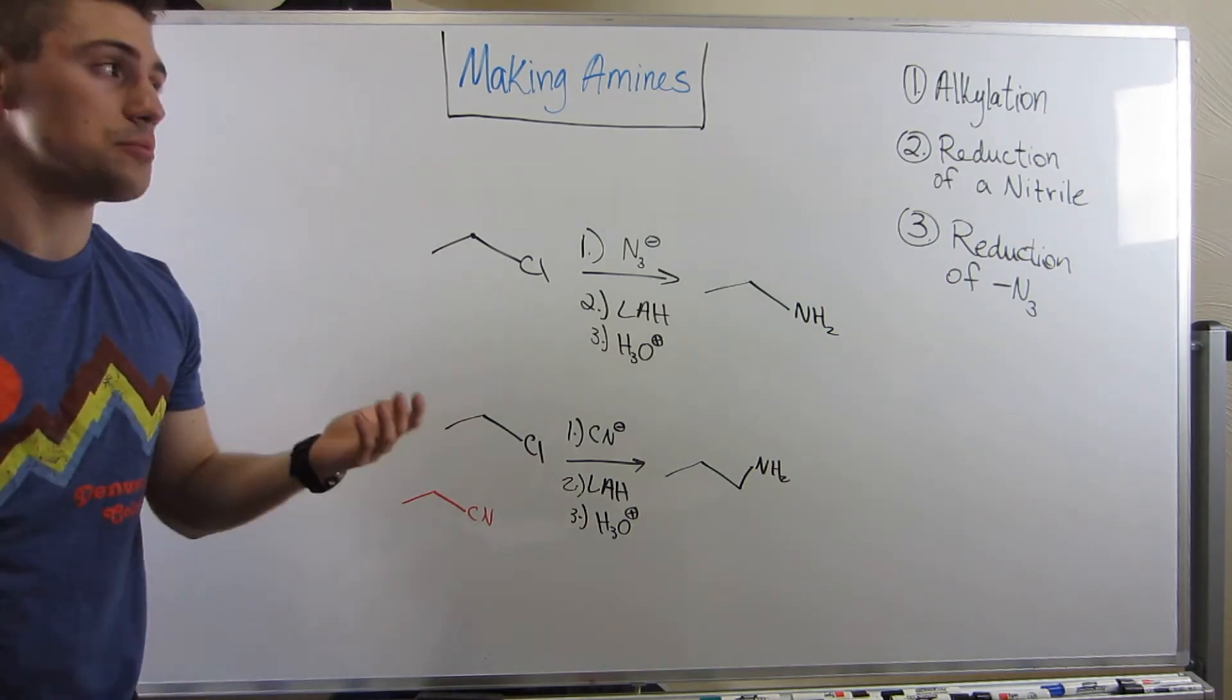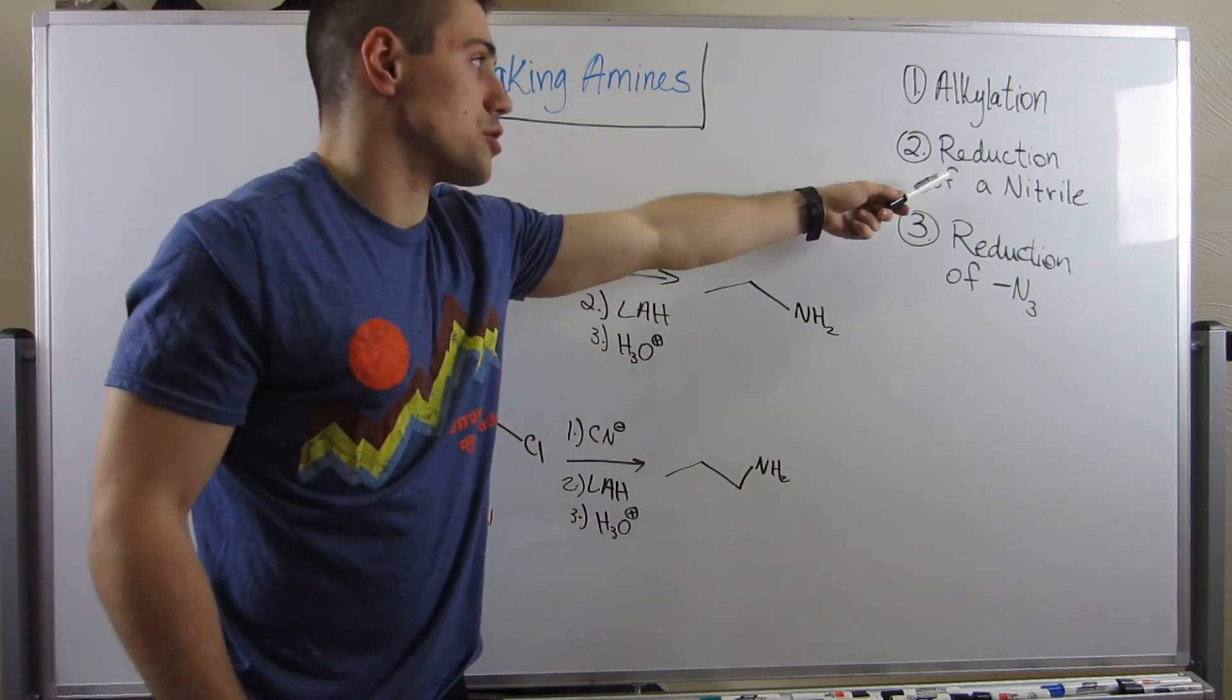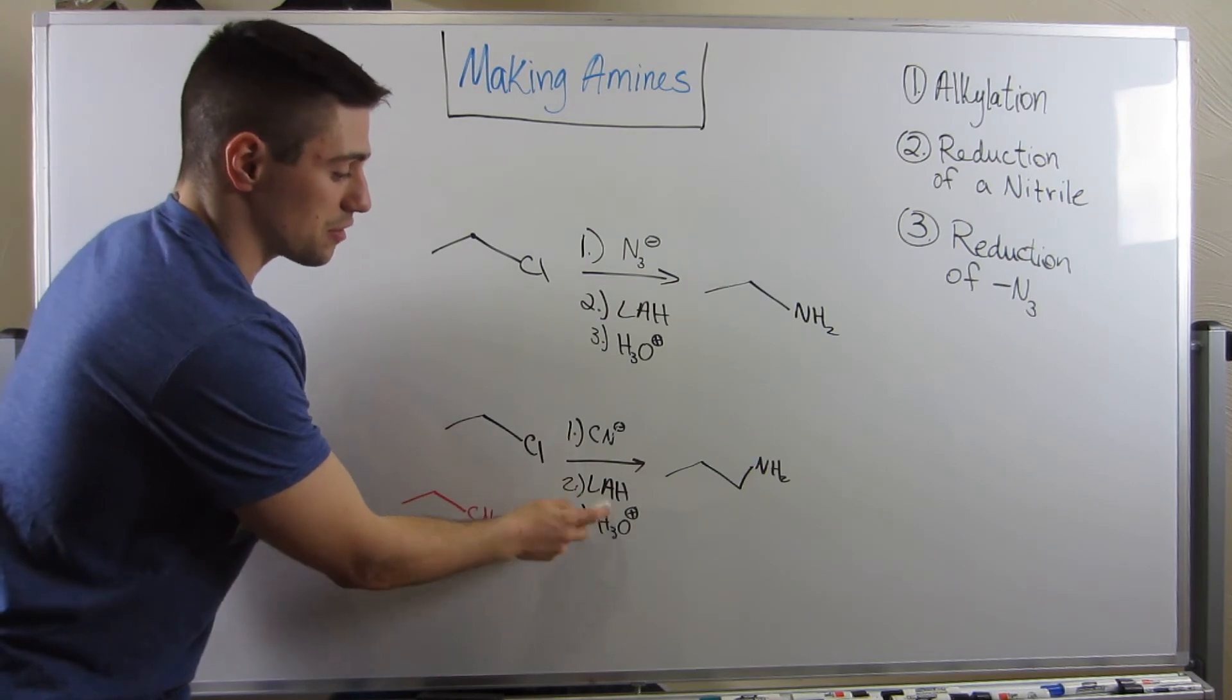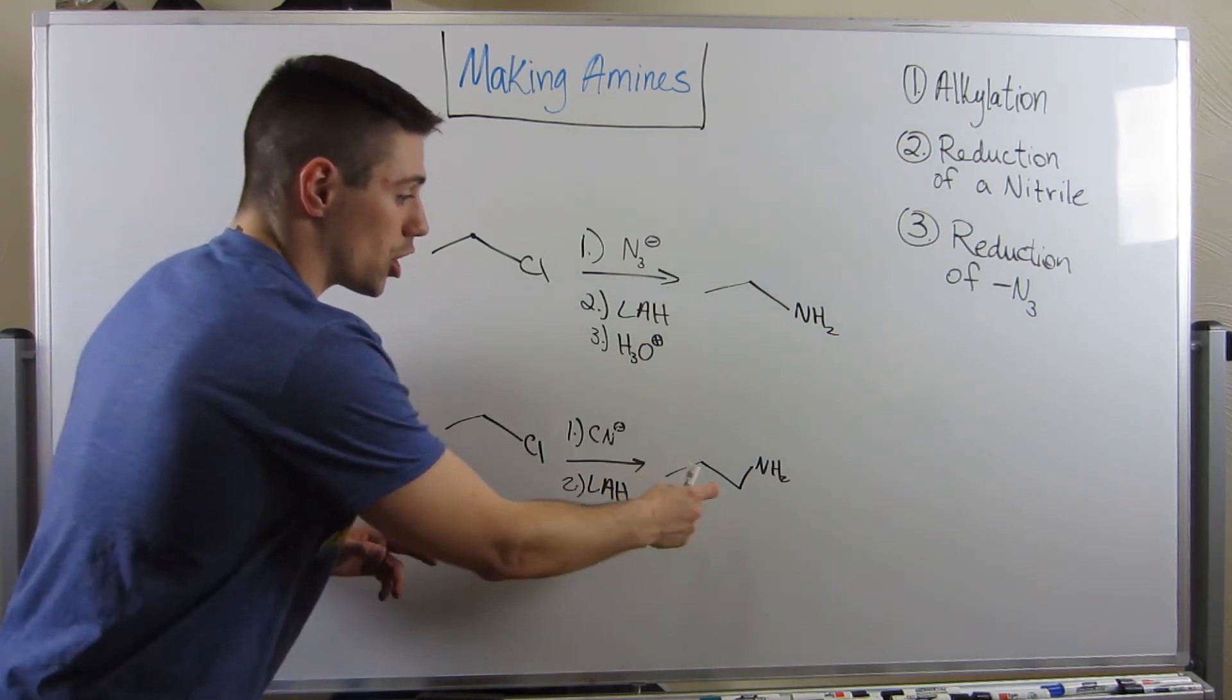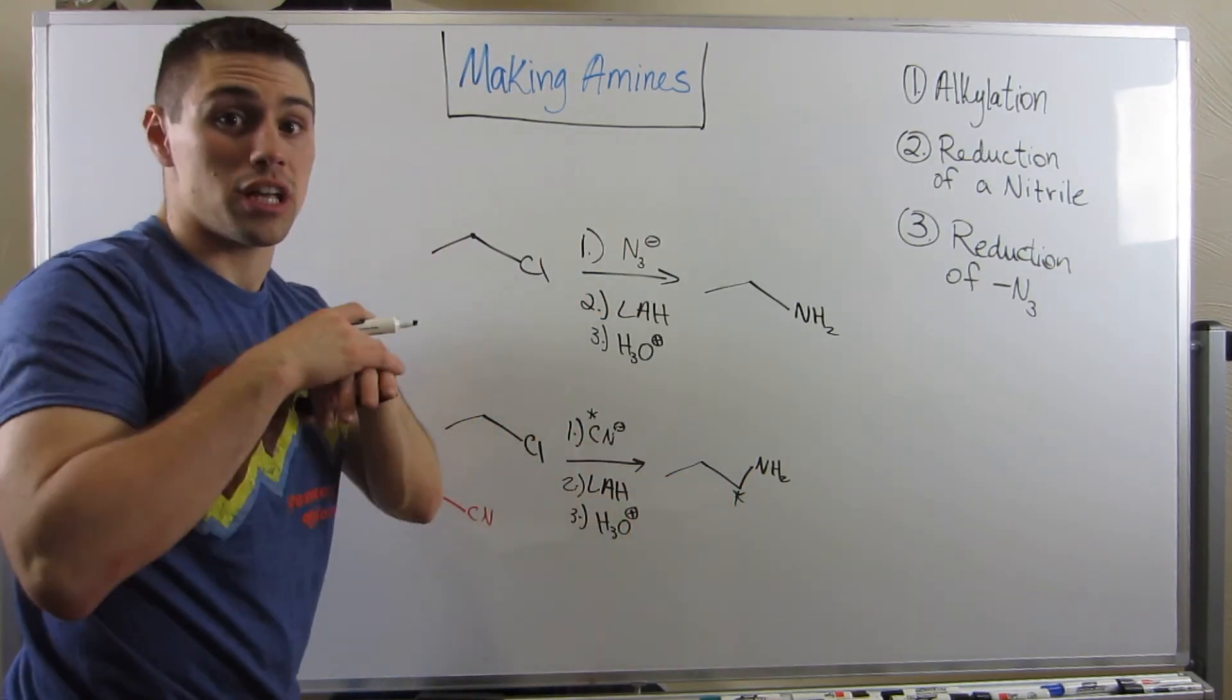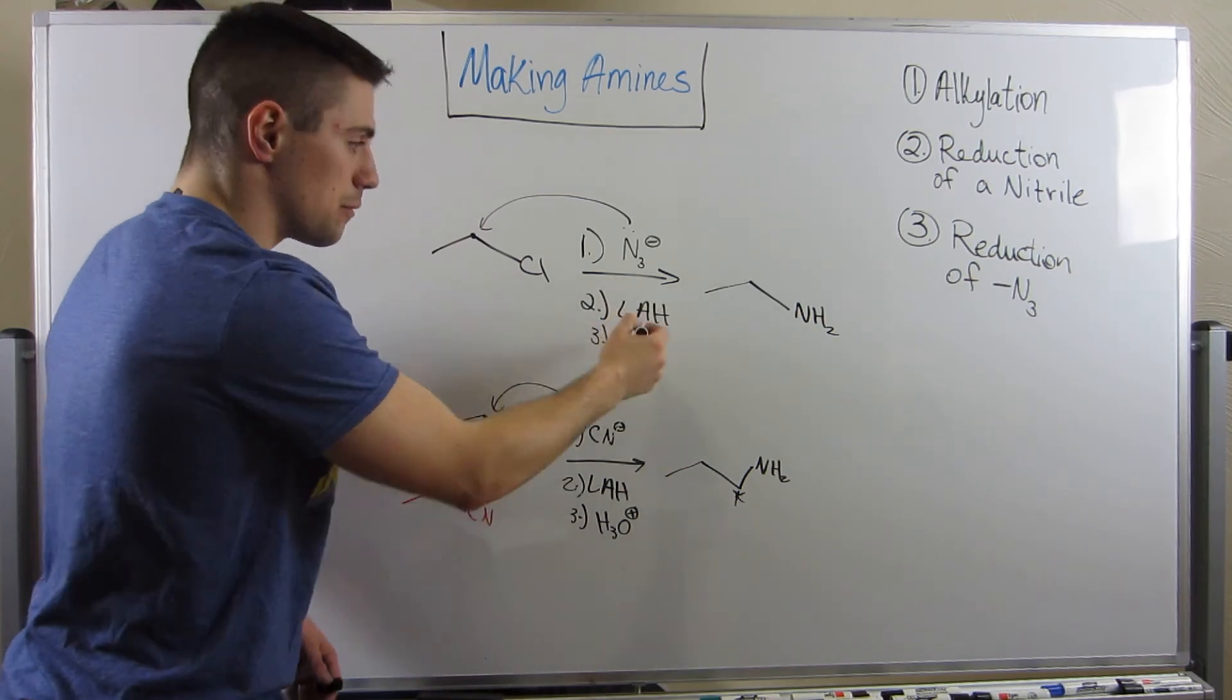So consider our options. You can do alkylation, just have some amine or ammonia do SN2. You could do a reduction of a nitrile where you'll probably have to stick on your nitrile through SN2 and then do a reduction with either LAH or H2 Pd-C. And remember, this lengthens your carbon chain by 1 carbon. This carbon is now that carbon. Or if you want to keep your carbon chain the same, use N3 minus as your nucleophile instead. That's what that would look like. And then reduce it with LAH.